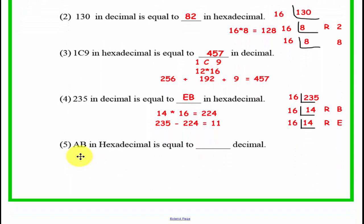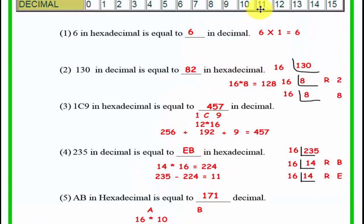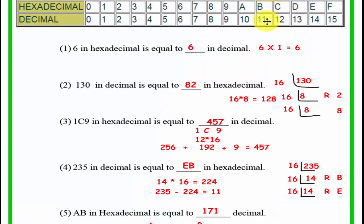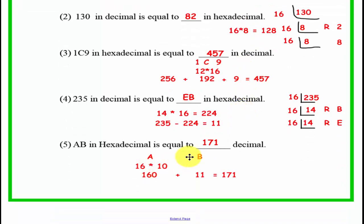And let's look at the last one. Here, we have AB in hexadecimal. What is it equal to in decimal? Well, it's going to be 171, and how do we figure that out? Well, B, if you look up here, B is equal to 11, and A is equal to 10. So, B is 11 times 1 is 11, and A, which is 16 times 10, is 160. 160 plus 11 equals 171.